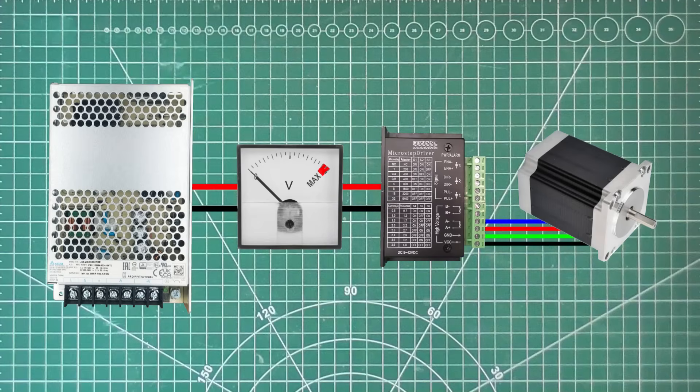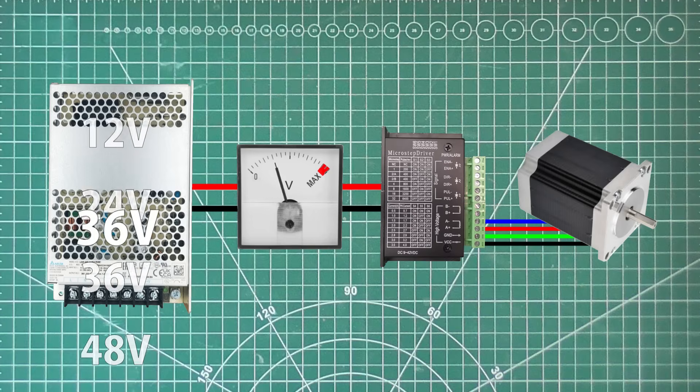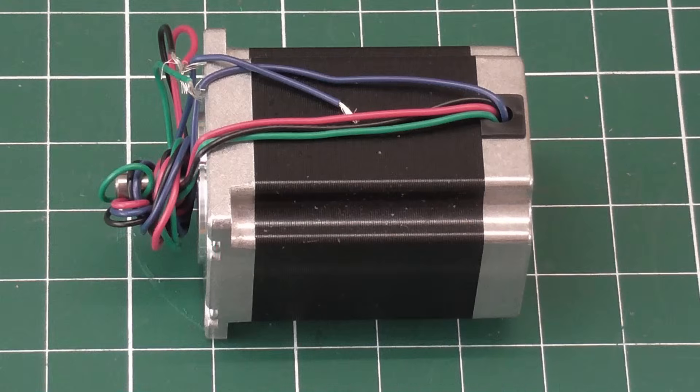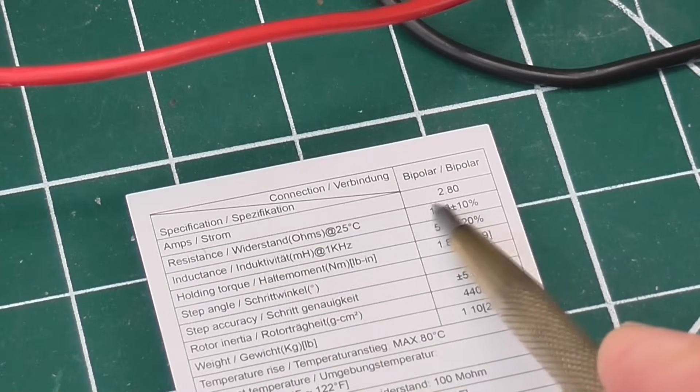Since power supplies often have voltages in multiples of 12 volts, a 36 volt supply seems like a good choice here. Let's say I have four of these stepper motors, which are rated at 2.8 amps.